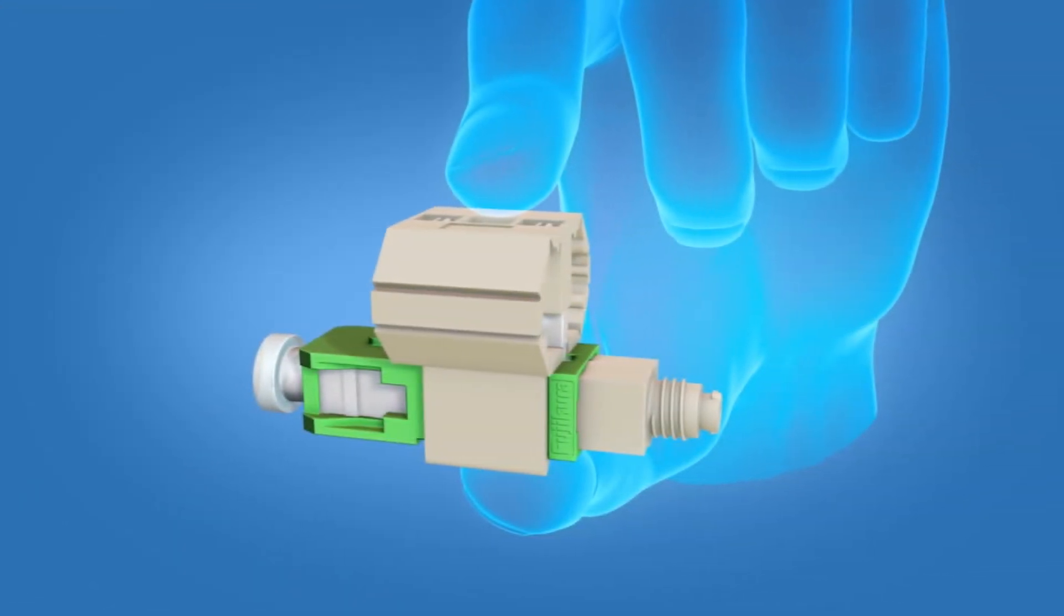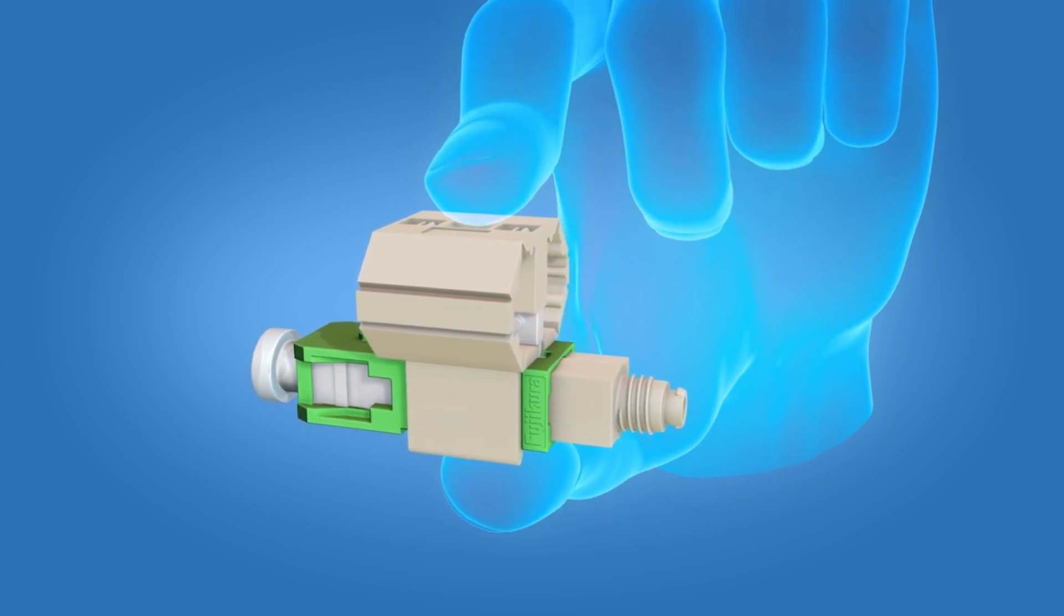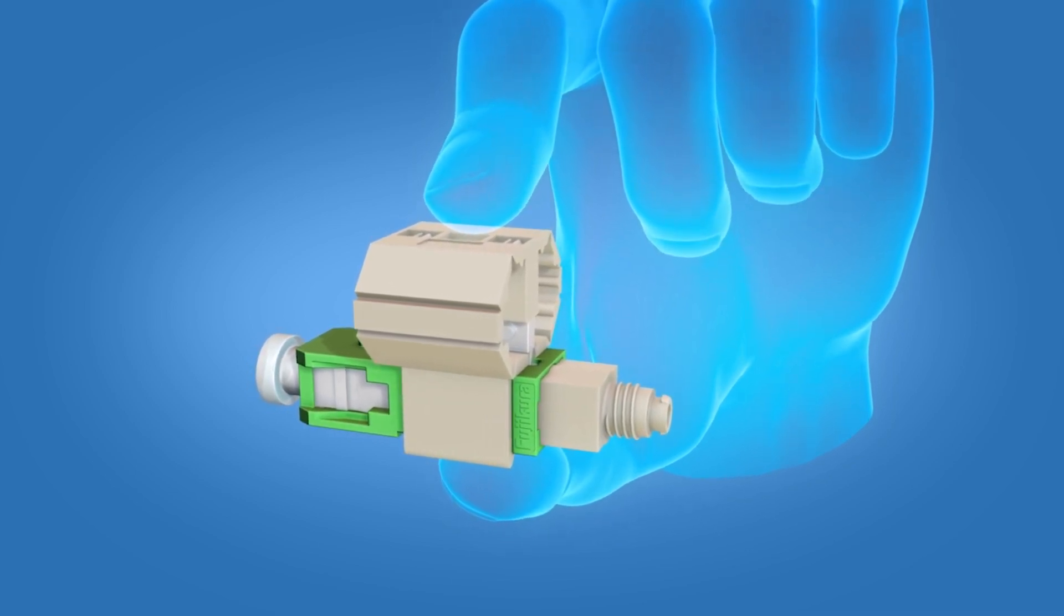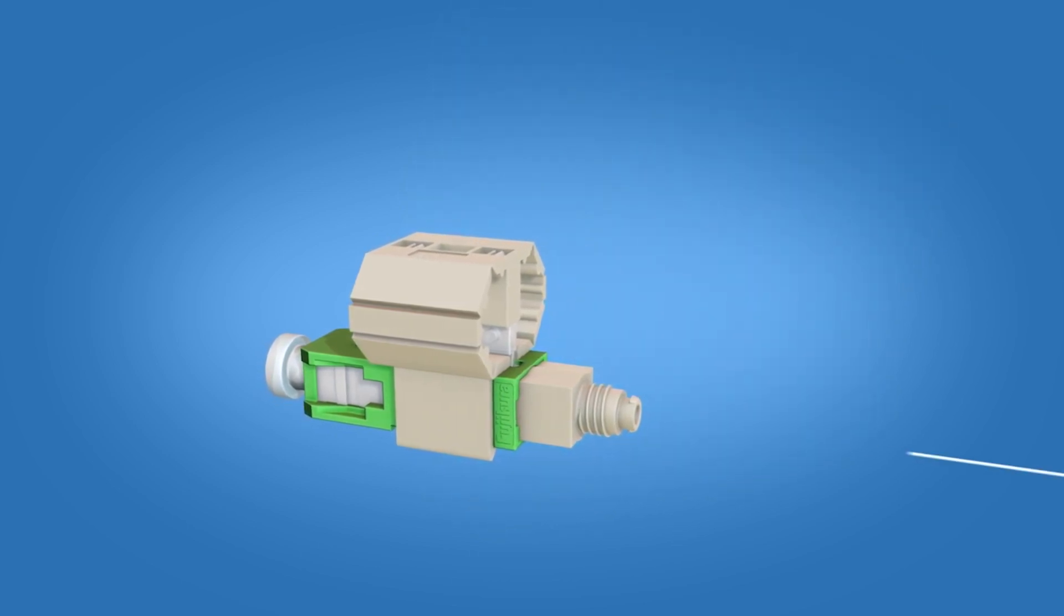Next, take the FastSC connector and squeeze the top and bottom of the wedge to ensure that it is engaged. Insert the fiber into the connector.